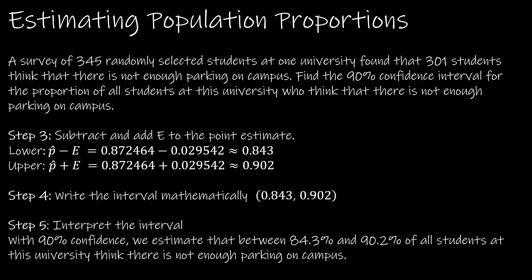Step three: we have to find the interval. Take our P hat value, subtract E, add E to get your lower and upper estimates. Then we write the interval mathematically so 0.843 and 0.92. Again these are percentages, so whenever you're dealing with a proportions question, the solution is going to be percentages.